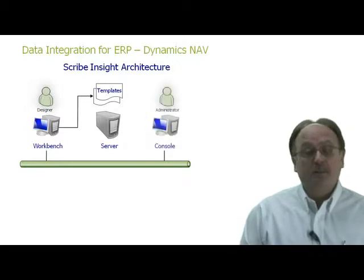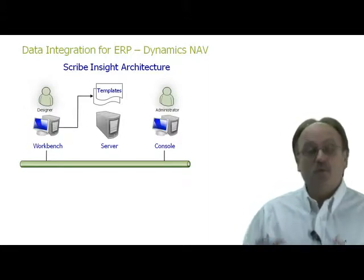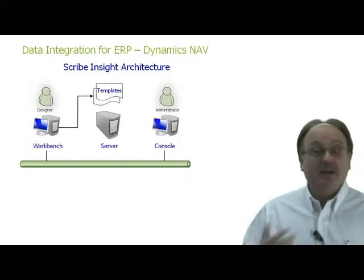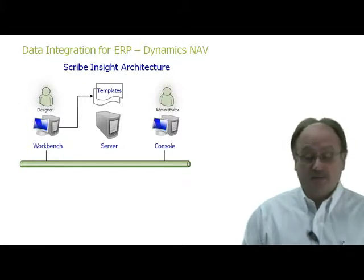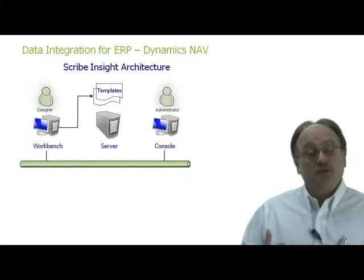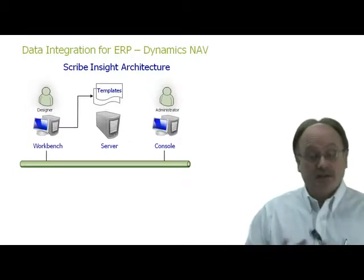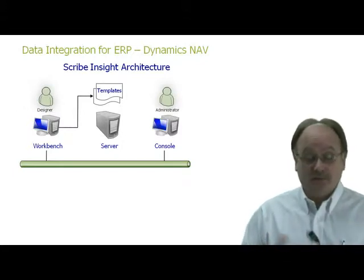The second component of Scribe Insight is the console. The console is an administrative-type application where the admin user would dictate how data maps would be fired transparently and unattended. We support four different types of process events: file-based, time-based, query-based, and queue-based. In addition to controlling those automation features, we also have monitors as well as alerts within the console application.